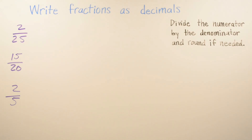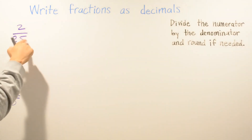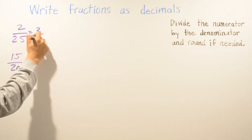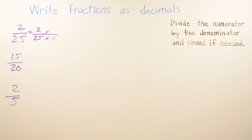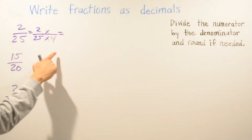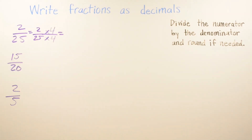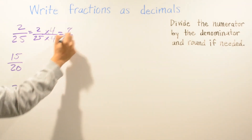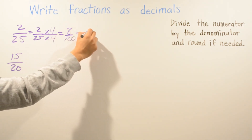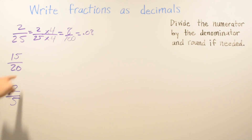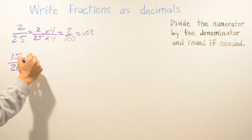For these three problems I feel more comfortable using multiplication because it's faster. For the first problem, I need to find a base of one hundred. I multiply twenty-five times four to get one hundred. Whatever I do on the bottom I also do on the top, so two times four is eight and twenty-five times four is one hundred — giving me a decimal of 0.08.